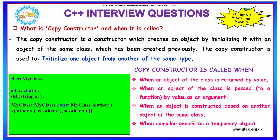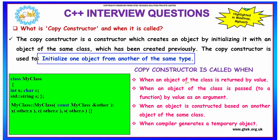What is a copy constructor and when is it called? A copy constructor is a constructor that creates an object by initializing it with an object of the same class that was created previously. It is used to initialize one object from another of the same type. In the example, we pass the value of 'other', which is of the same class and has its own set of members x, c, and s, and we assign those values to the new object using the copy constructor.